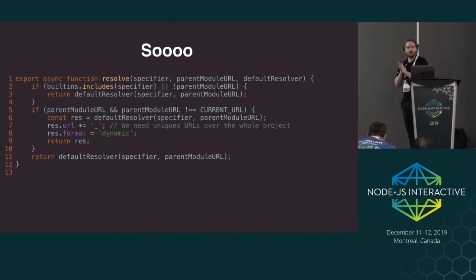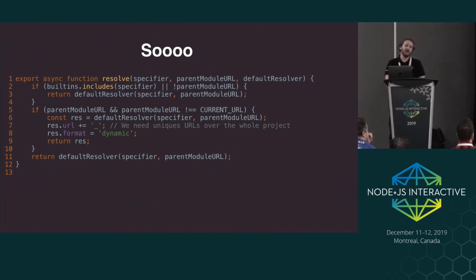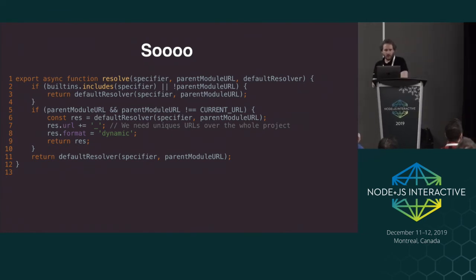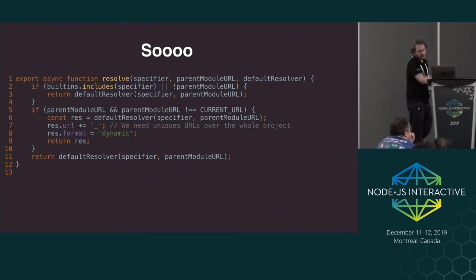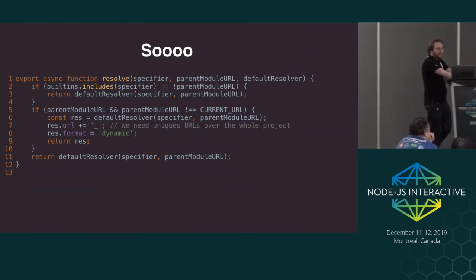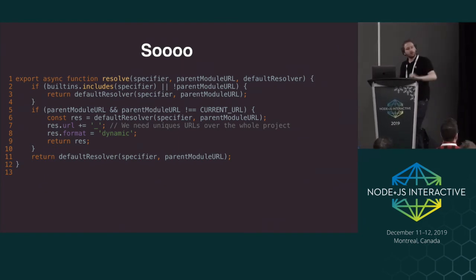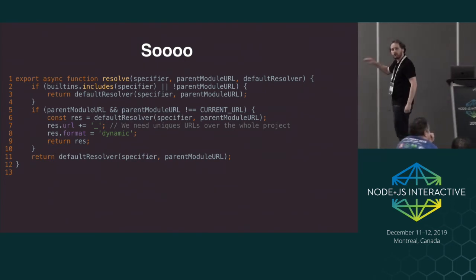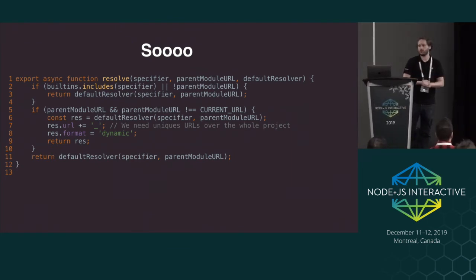Let's go back to our resolvers, because that's still the main point of this talk. We create a resolve function, and on line 5 we check if the module is not imported from itself — to prevent infinite loops. Then on line 7 we append an underscore to the URL to avoid having two modules with the same URL. The format here is 'dynamic', telling Node.js this module won't be found on disk — it will be created dynamically from the loader.